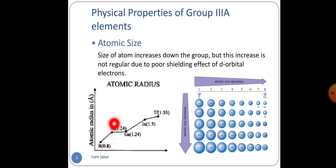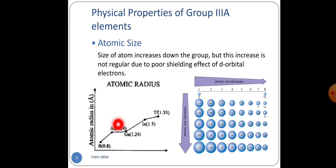There is not a regular increase, as you can see from the graph — from aluminium to gallium there is only a minor increase in size, because in gallium there is a d-orbital which provides poor shielding effect and the size of atom does not increase much.